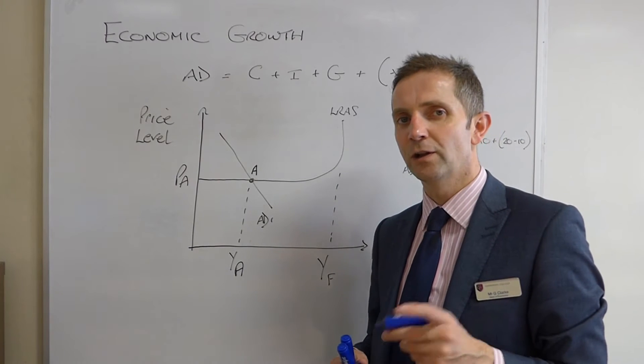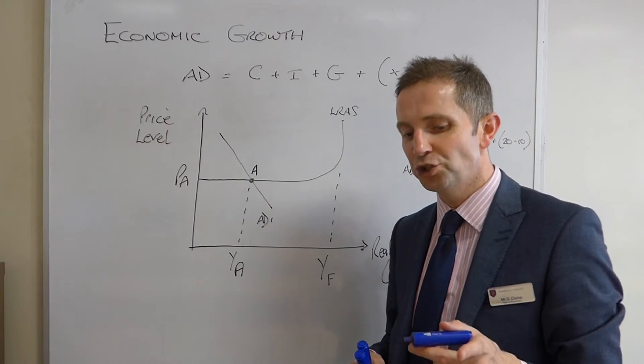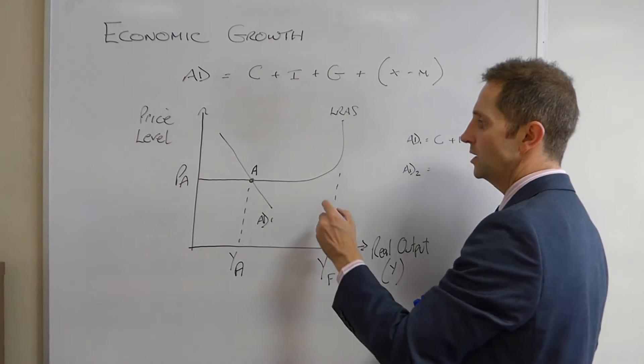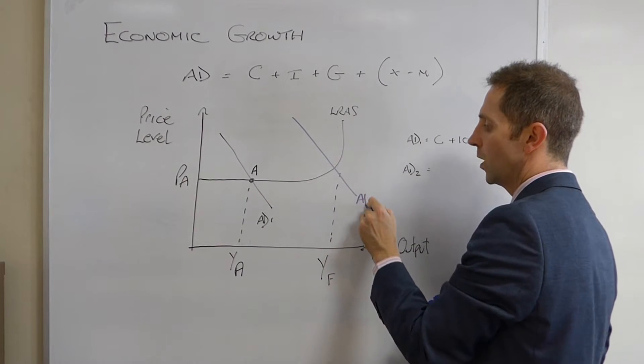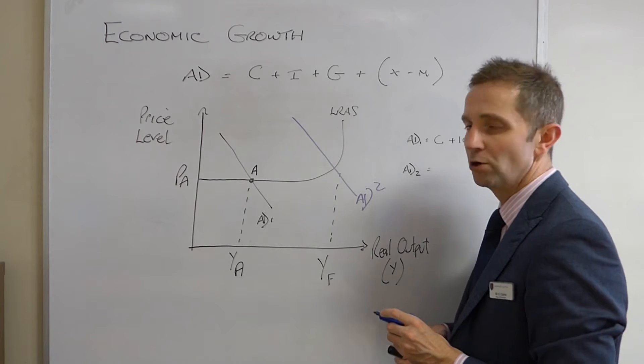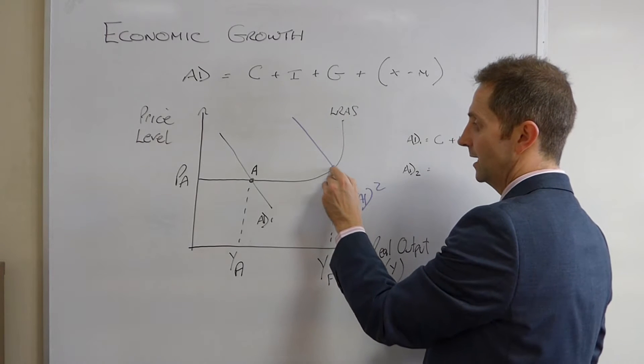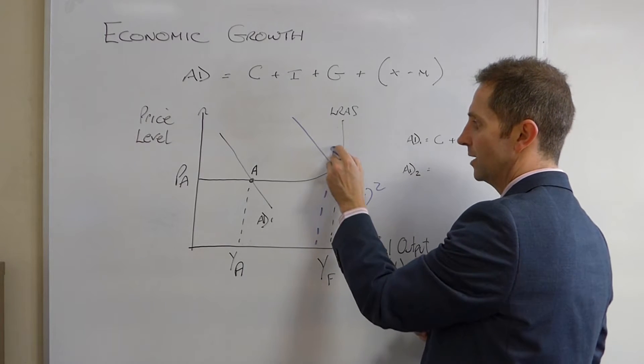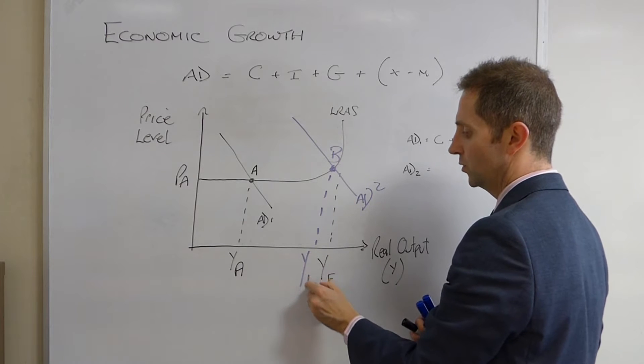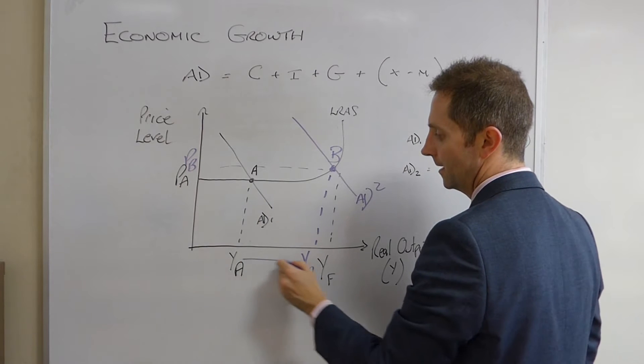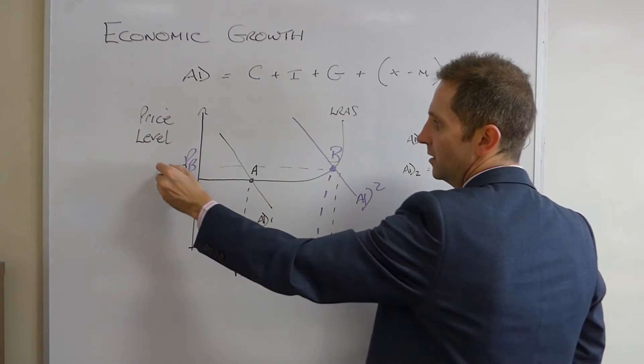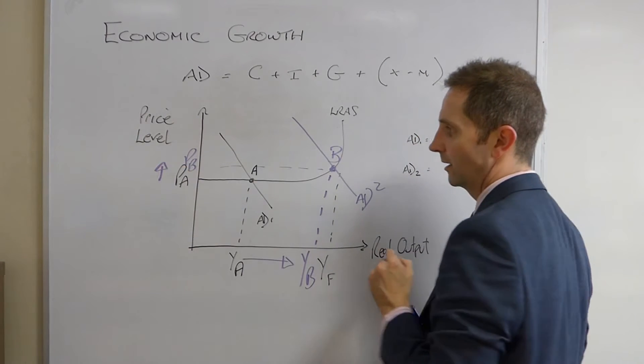Okay, now be careful, it's not a movement, it is a shift. So, the AD curve, we're going to say shifts, for example, from AD1 to AD2. So, we end up at a new equilibrium at B, output YB, price level PB. And we've moved in this direction, and price has gone in this direction.